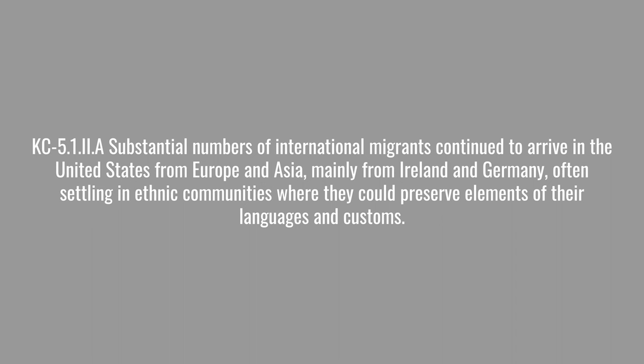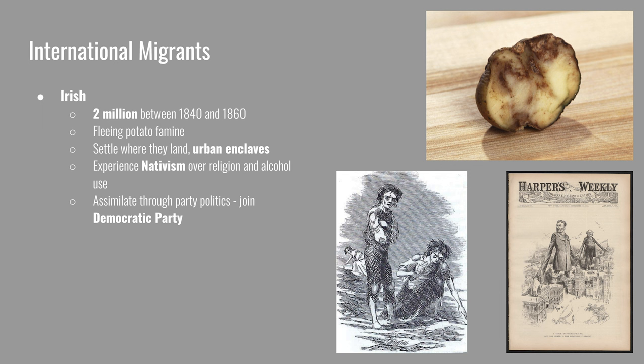Substantial numbers of international migrants continued to arrive in the United States from Europe and Asia, mainly from Ireland and Germany, often settling in ethnic communities where they could preserve elements of their language and customs. The Irish experienced a potato famine in the 1840s. Between 1840 and 1860, two million Irish immigrants came to the United States. Ireland as a whole lost nearly half of its population fleeing the potato famine. Irish migrants usually settled in urban enclaves — they didn't have a lot of money to go buy land and settle in the interior.